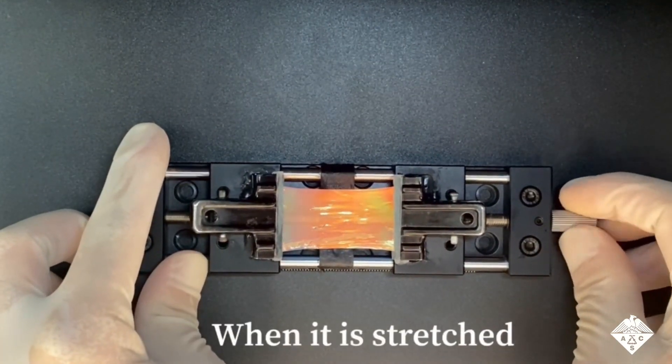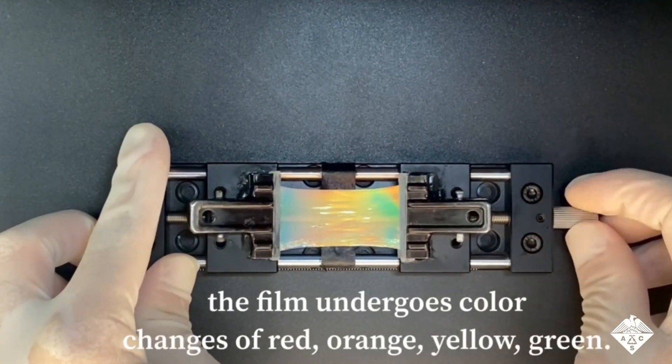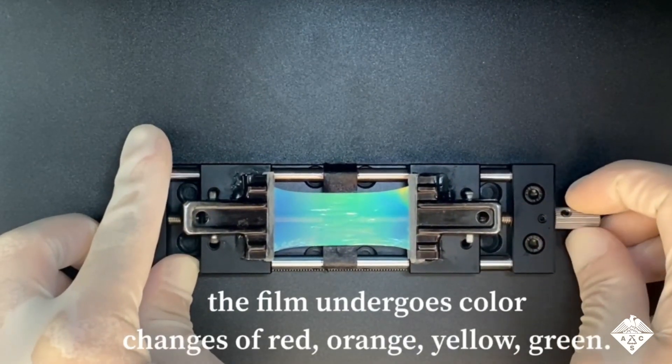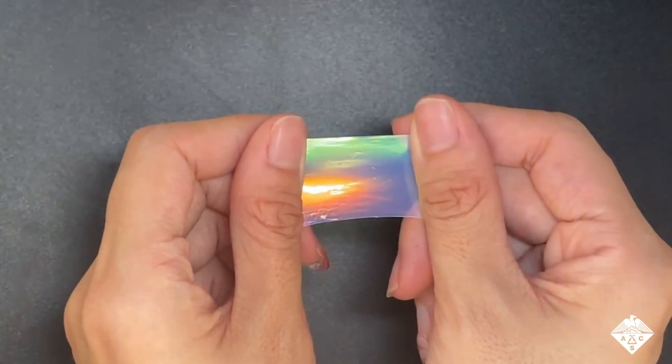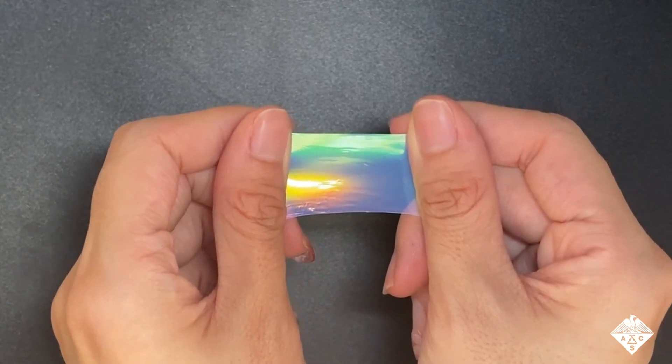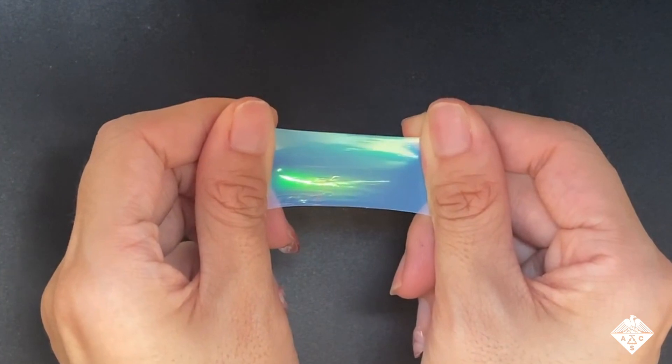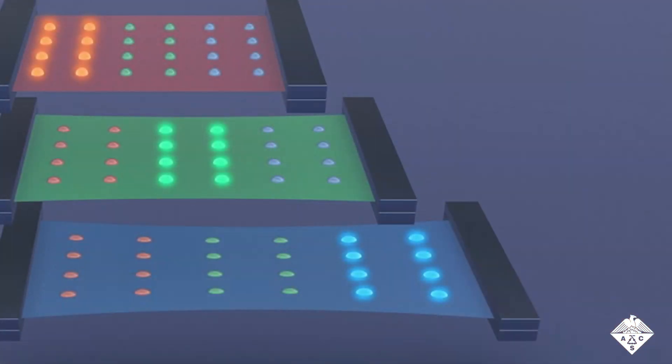At first, the gummy material looked red, but when it was stretched with a uniform force, its color shifted through the rainbow. And when pulled by hand, the material produced a kaleidoscope of colors, as different parts of the material had different forces on them.